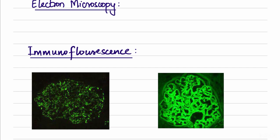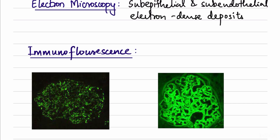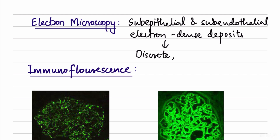On electron microscopy, immune complexes are deposited in two regions: sub-endothelial in earlier stages and sub-epithelial in later stages. These areas are electron dense. The deposits are discrete rather than diffuse or continuous, and have a characteristic hump-like appearance — resembling the hump of a camel — which is the hallmark finding on electron microscopy.